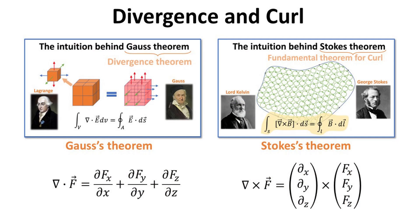Although it is my aim to explain the Maxwell equations with as little math as possible, I do not know of a way to do this without the two most important mathematical concepts in vector calculus. They are the concept of divergence and curl of a vector field, defined as shown. I shall use one minute to briefly explain what divergence and curl means intuitively.